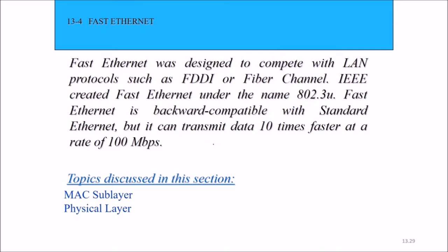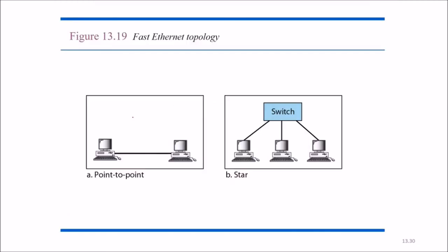Where came the fast Ethernet? Fast Ethernet was designed to compete with the LAN protocols such as FDDI and Fiber Channel. So IEEE created fast Ethernet under the name 802.3U, U for fast Ethernet. Fast Ethernet is backward compatible with standard Ethernet but it can transmit 10 times faster at a rate of 100 Mbps. 10 Mbps became 100 Mbps by fast Ethernet. This is the fast Ethernet topology: point to point and star. Most of today's topologies are star.